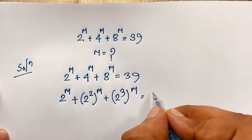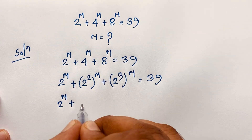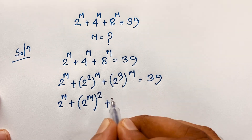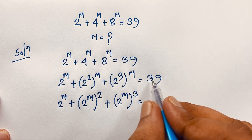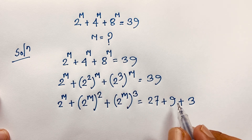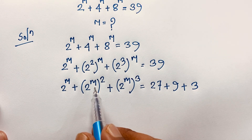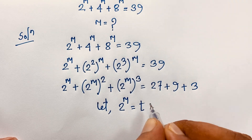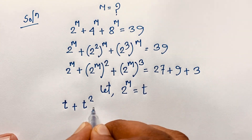So at this moment I have 39 on the right side. Now I apply the exponential formula. This first expression is 2 to the power m, the second expression is (2^m)², and the third is (2^m)³, all equal to 39. I decompose 39 as 27 plus 9 plus 3. Now let me suppose that 2 to the power m equals t. So the equation becomes t plus t squared plus t cubed equals 39.